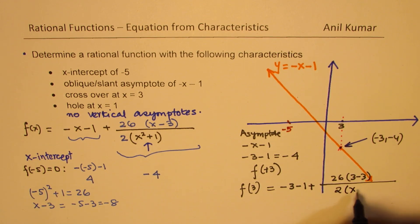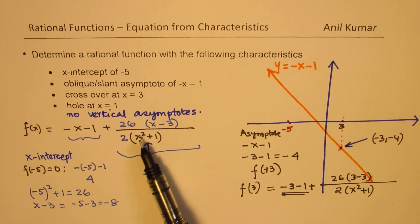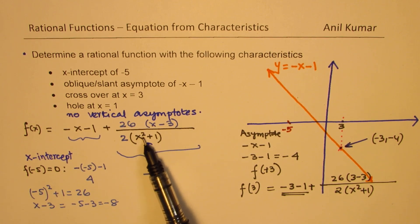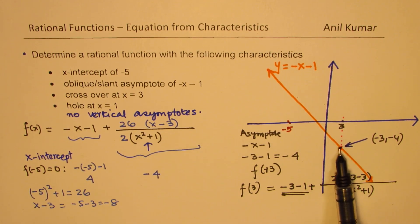And here we have 2 times x squared plus 1. Now since that is 0, I get the same value as the function. Because this half is 0 for 3, and therefore, we have a common point. Do you get the idea?